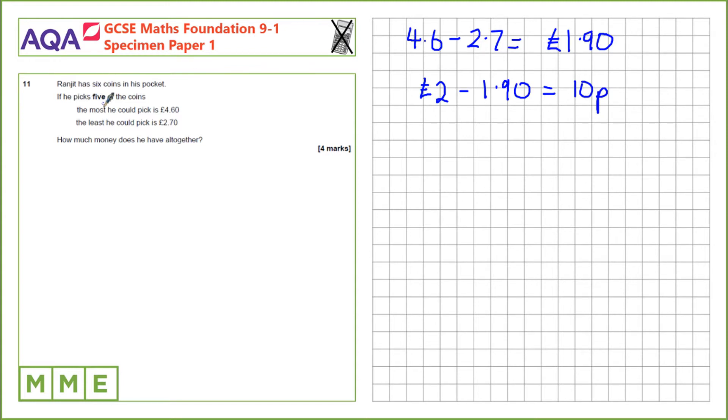He has six coins in his pocket and he chose five. So in total, he has £4.70 plus the leftover 10p, which equals... sorry, £4.60 plus the 10p is £4.70.